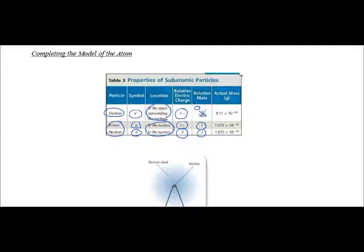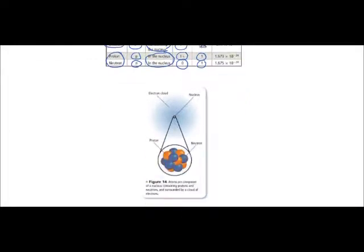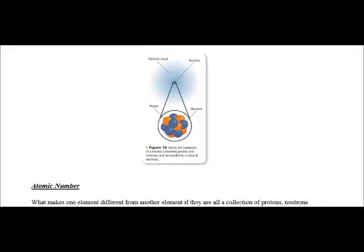So diagrammatically, we have protons and neutrons located within the nucleus and somewhere around the nucleus is the region where electrons are found.